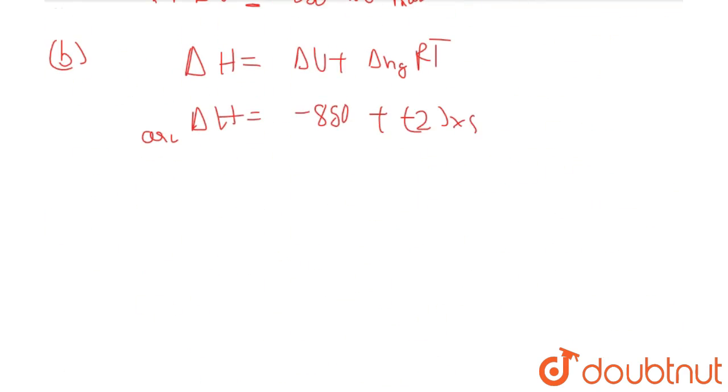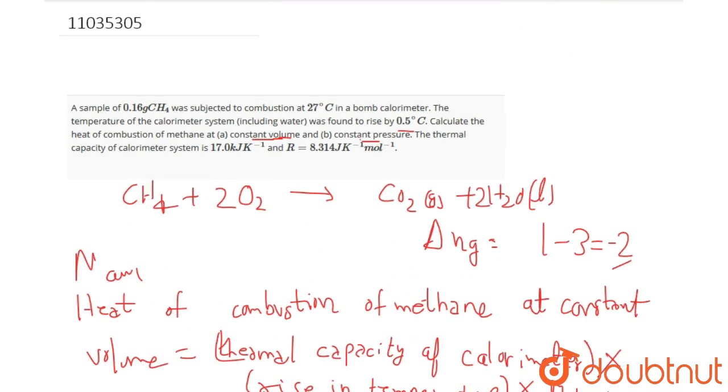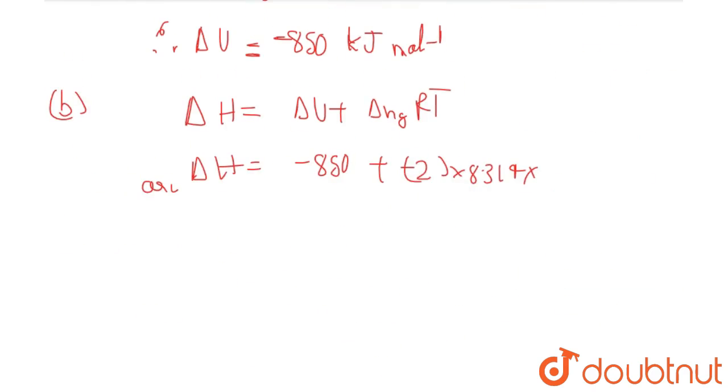Minus 2, R is 8.314, temperature is 27 degrees Celsius, that is 300 Kelvin, and we need to write this into 10 to the minus 3 so that the whole unit gets into kilojoule per mole. And if we further simplify, we will get 854.98 kilojoule per mole.